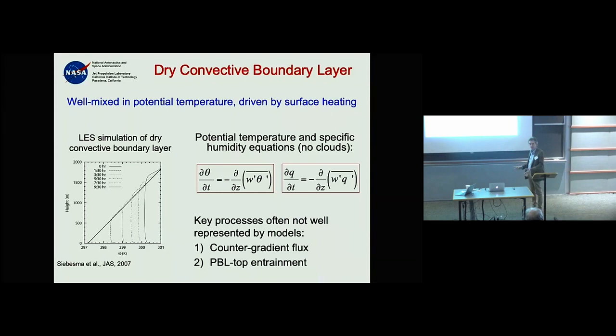An LES simulation shows the mean potential temperature evolving: you start with a stable boundary layer at night or in the morning, then as the surface warms the boundary layer gets warmer and warmer, stays well-mixed, and basically grows through entrainment.